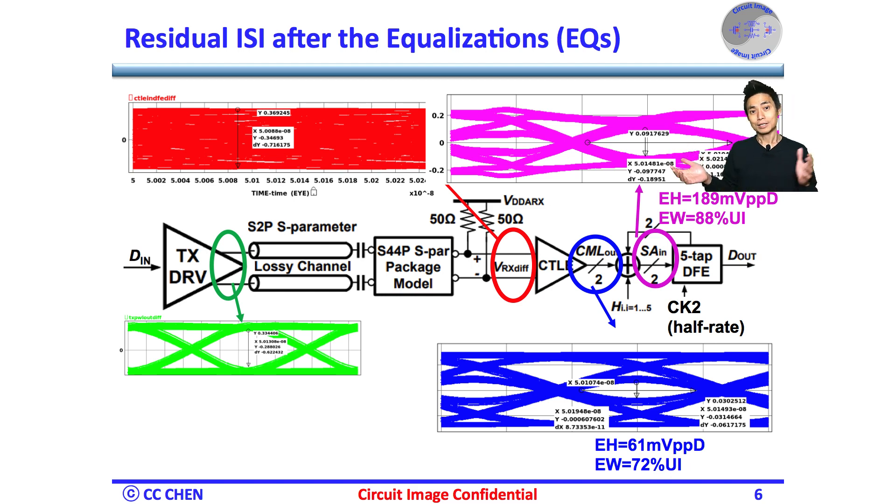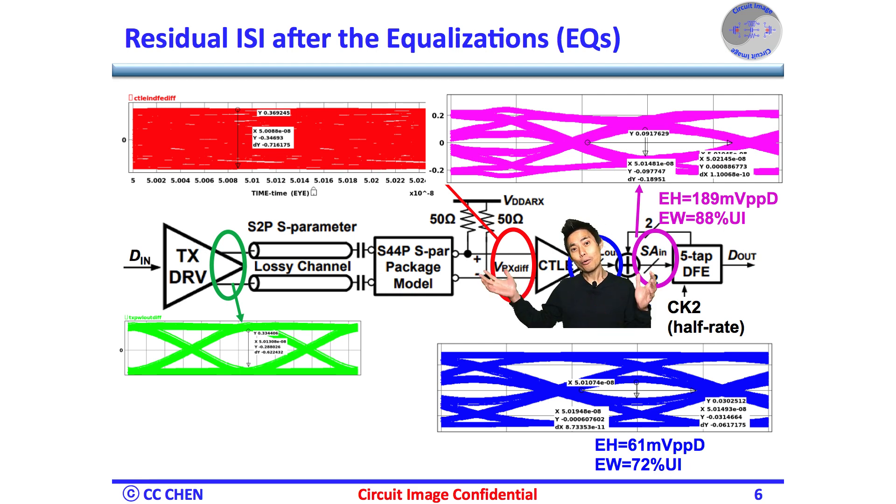Therefore, the residual eye height will be another starting point at the eye sampler input for the link budget here. What's the next image for us to move forward? Think about the noise image for 5 seconds.